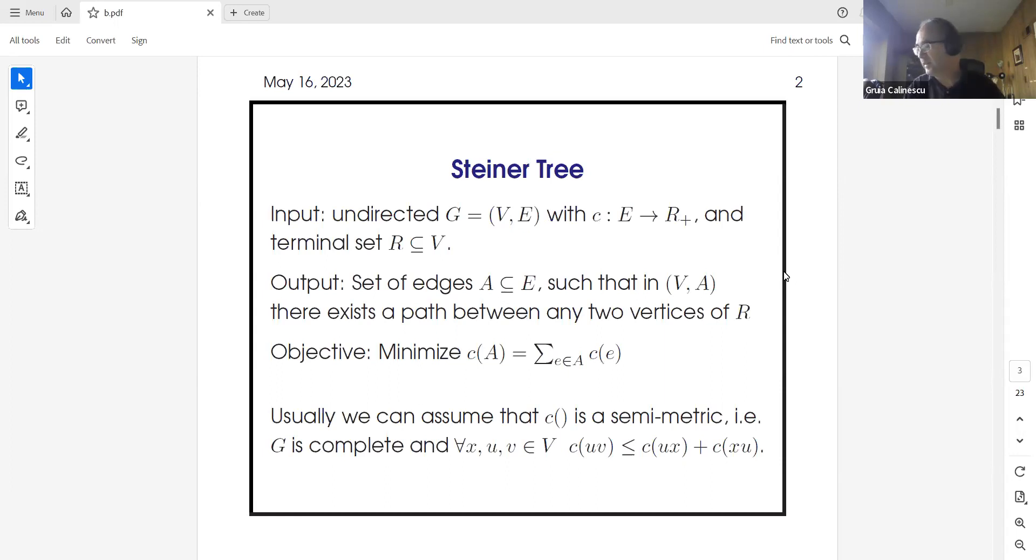How many here are familiar with the Steiner-Tree problem? We have three, four. I have people in the audience who have seen this talk before. We have an undirected graph with vertices and edges with non-negative cost on the edges. Among the vertices, there are special vertices called terminals, this is a set R. The goal is to find a set of edges such that there exists a path between any two vertices of R. This is a generalization of minimum spanning tree because we only have to connect the terminals, not all the vertices.